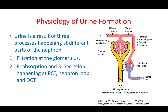Let's look at the physiology of the nephron. Before we start, I need you to think of the nephron as a simple pipeline. This means that at different places along the nephron there are different processes happening, and in general these processes can be described in three steps.